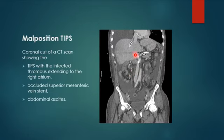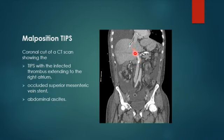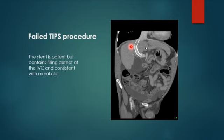One patient had TIPS malposition — the stent was thrombosed with thrombus extending into the right atrium, occluding the superior mesenteric artery, with dislodgement and discontinuity of the stent. Another patient with portal hypertension and ascites had a filling defect in the IVC after TIPS placement, indicating a mural clot causing procedural failure.